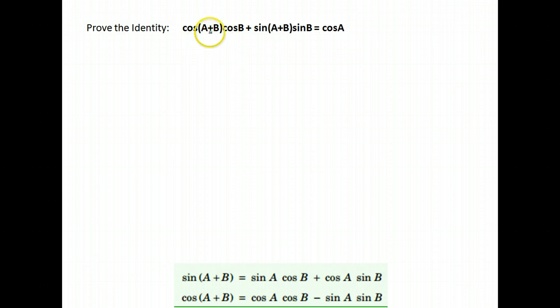In this identity, we're asked to prove that cosine A plus B times cosine B plus sine A plus B times sine B is just the cosine of A. It would be near impossible to expand this right-hand side to look like this. It would be much easier to work from the left-hand side and use our identities to show that it is in fact that right-hand side.